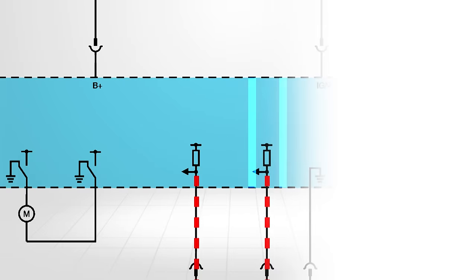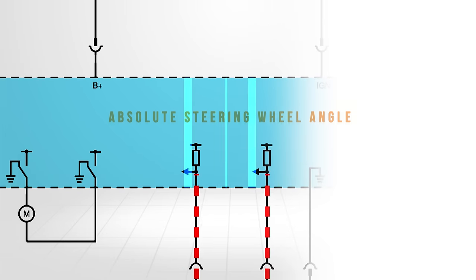The control module uses an algorithm based on the signal to calculate the absolute angle of the steering wheel using these inputs.